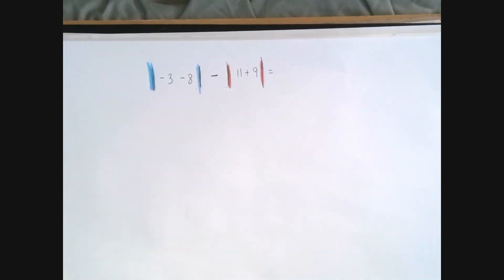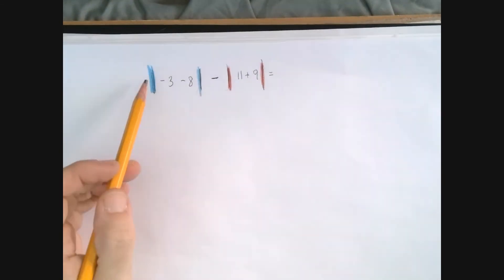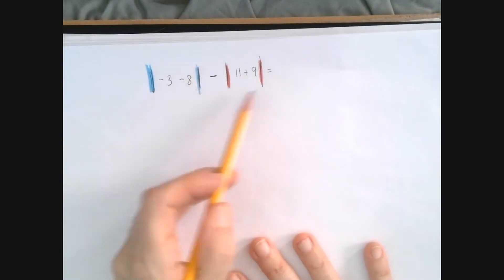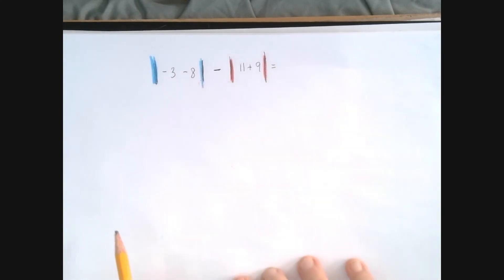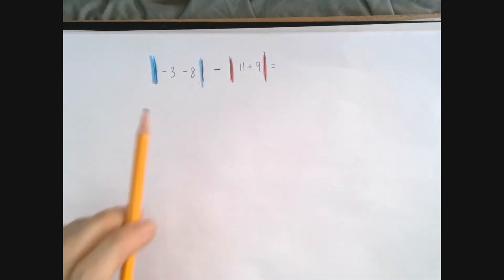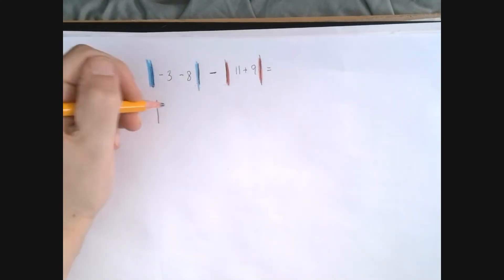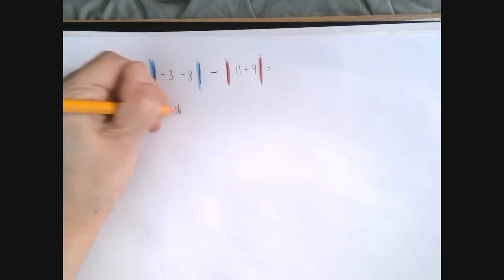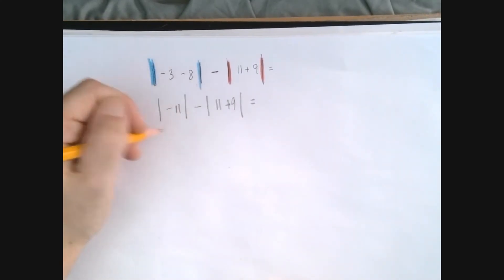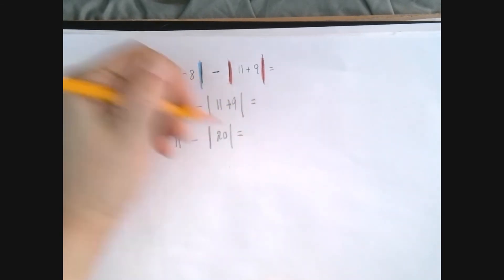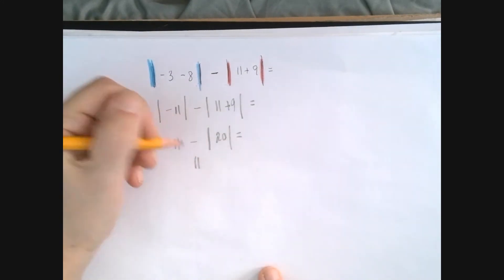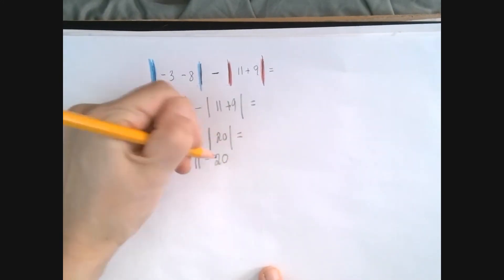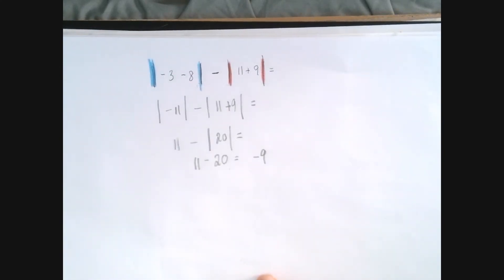Now it's more visible: we work out what's in this absolute value, we work out what's in this absolute value, we take the absolute values, and then we subtract. Because this is an order of operations problem, we make only one step per line. Negative 3 minus 8 is negative 11. The absolute value of negative 11 is 11. From 11 we subtract the absolute value of 20, which is 20, but we're still subtracting it. So the answer is negative 9.